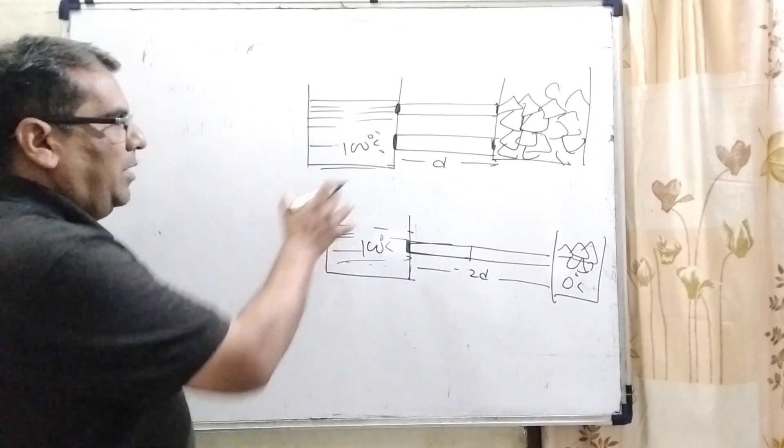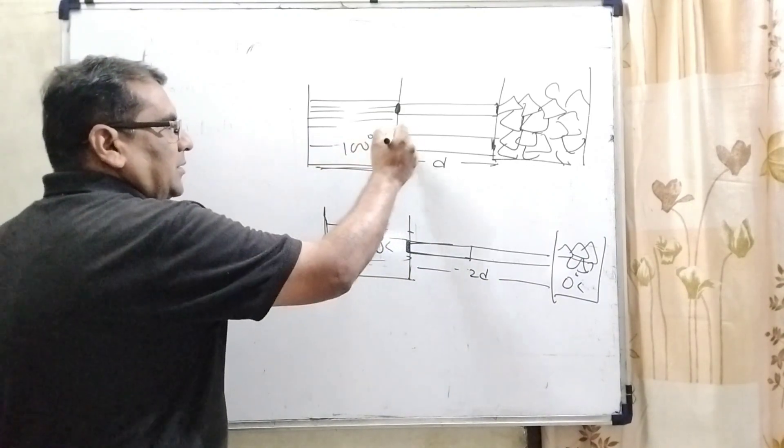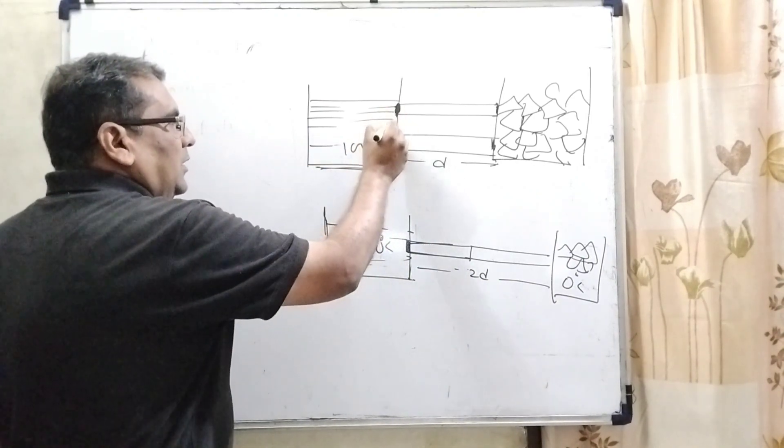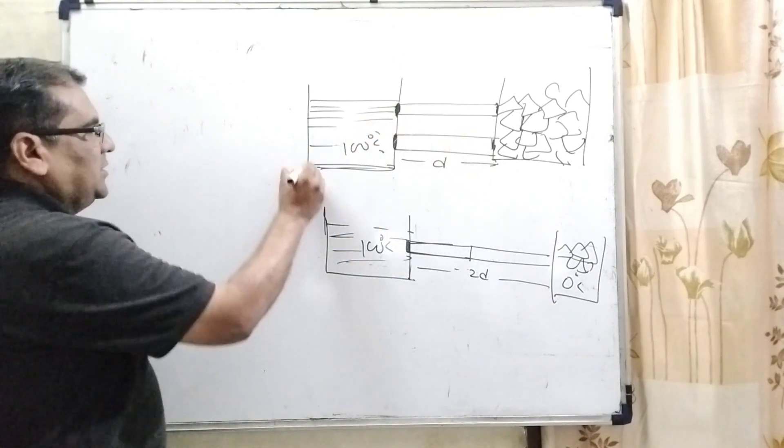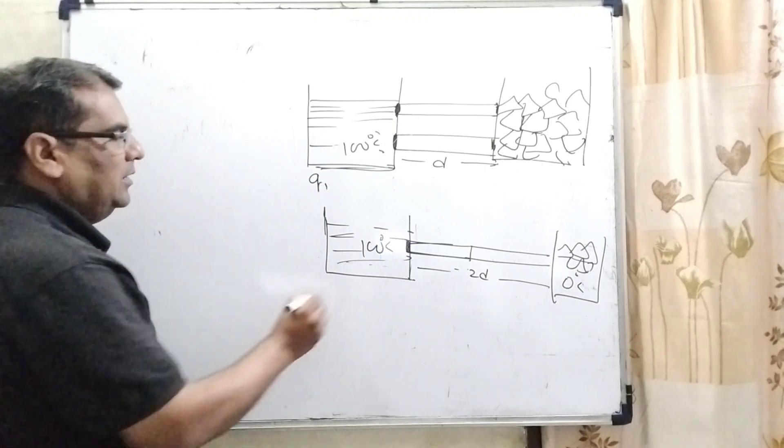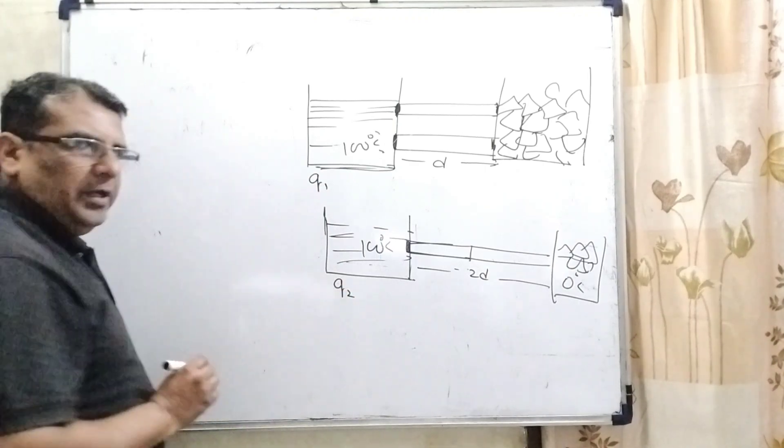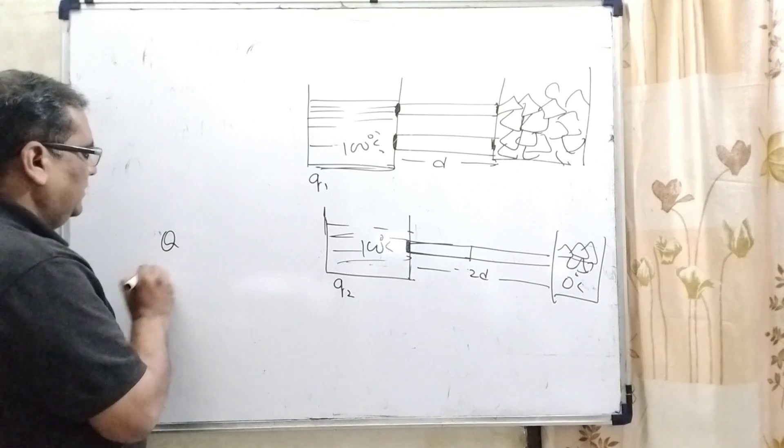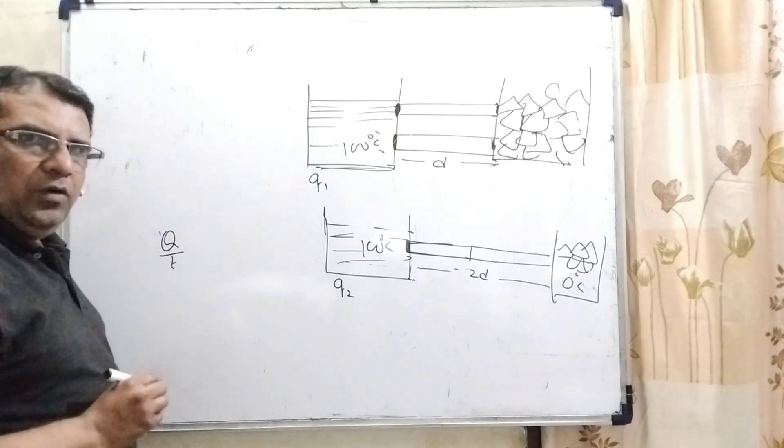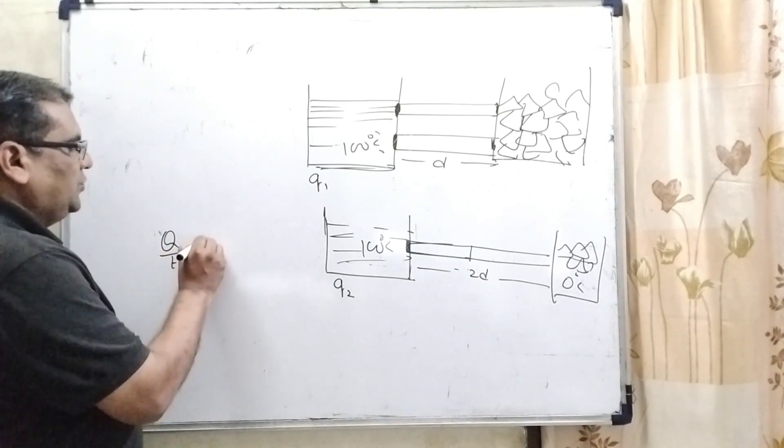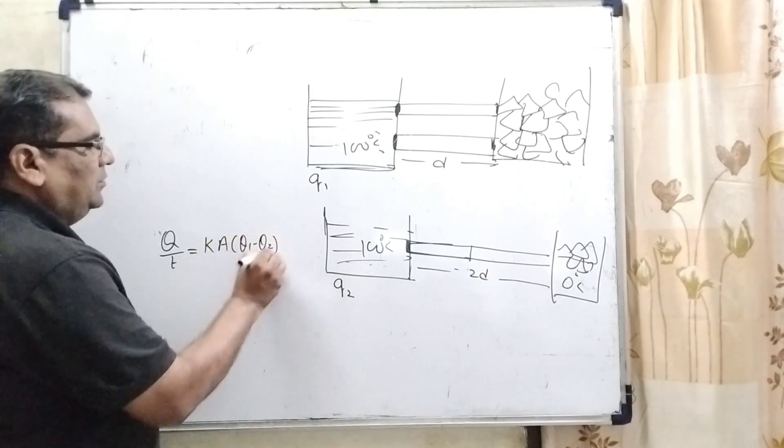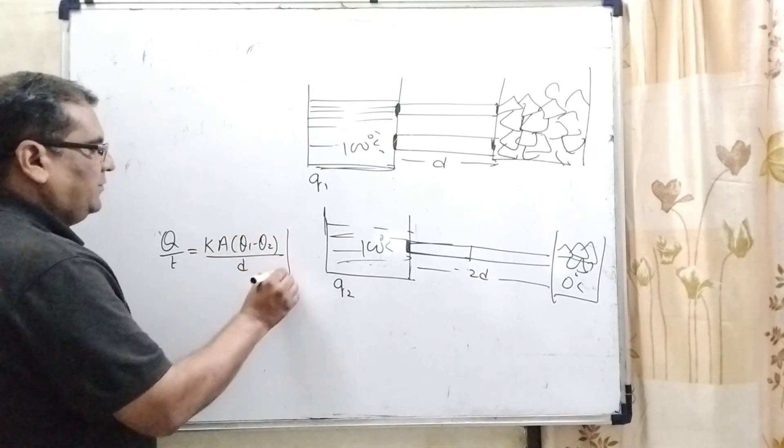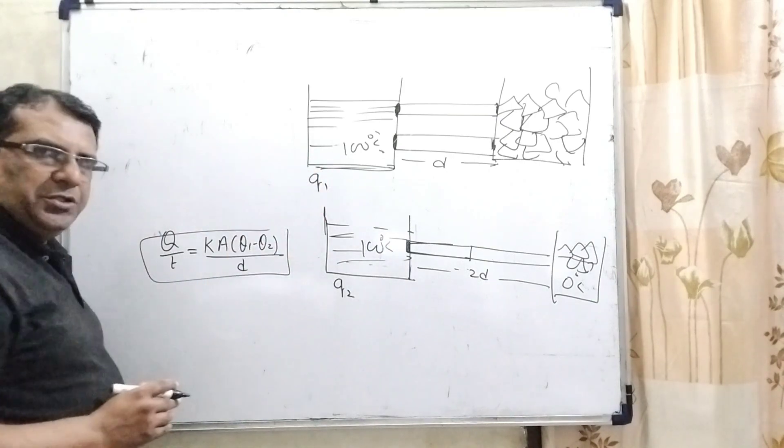So here, the amount of heat which flows from higher to lower temperature, that is considered here as first case Q1 and here Q2. So, as we know, the formula we are using is Q by T, flow of heat, is equal to K A times theta 1 minus theta 2 upon D. This formula we are using to solve this question.